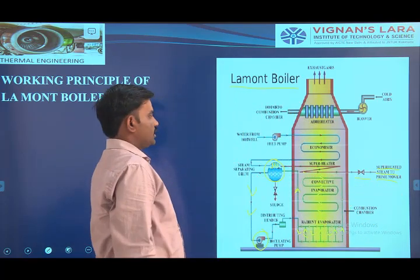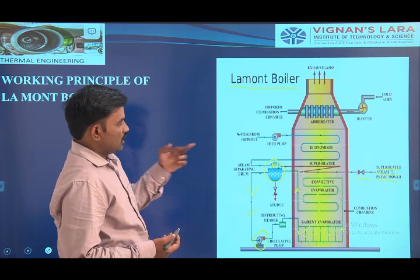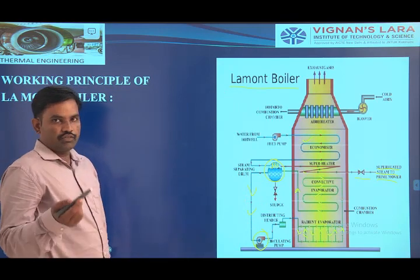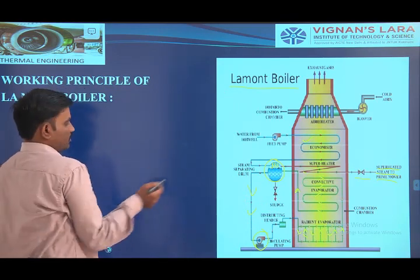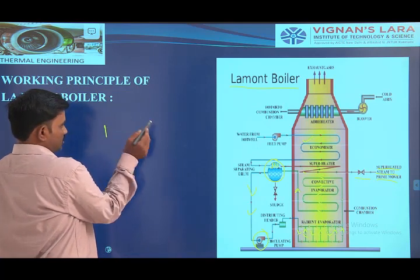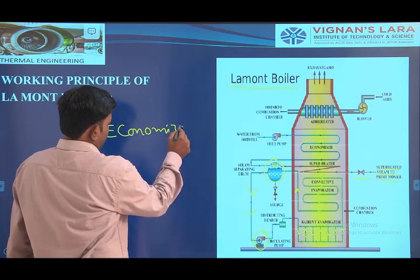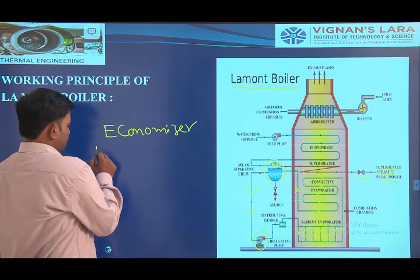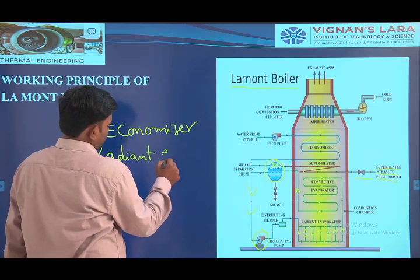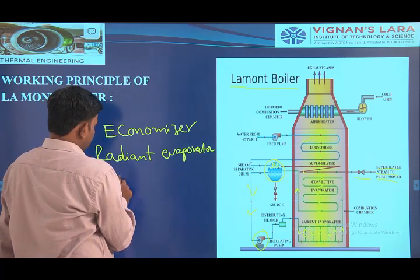Here the prime mover is mentioned — with the help of the prime mover, we are operating the turbine. We are also arranging the economizer here. With the help of these three heat exchangers, we are transferring heat of hot flue gases to the feed water. First we are heating the feed water in the economizer section, later we are heating the feed water in the radiant type of evaporator, and later we are heating in the convective evaporator.